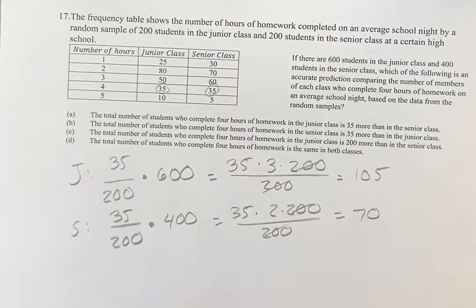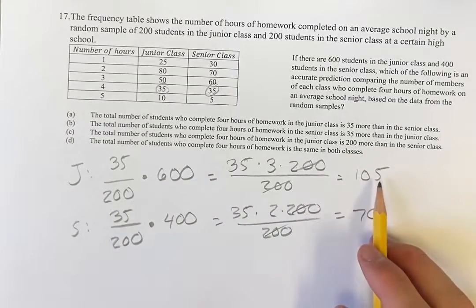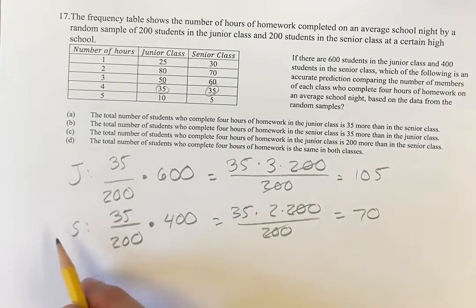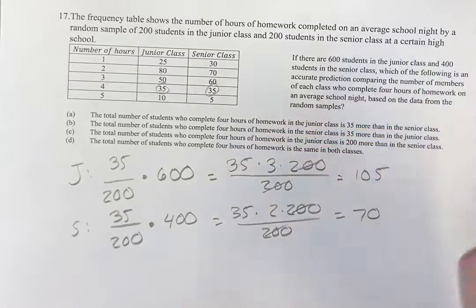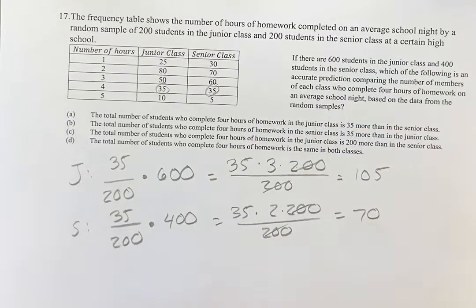So in the entire junior class, we can expect 105 to study four hours a night. In the senior class, you're going to expect 70. So which of these comparisons does that line up with? Well, we're looking at the difference between them.